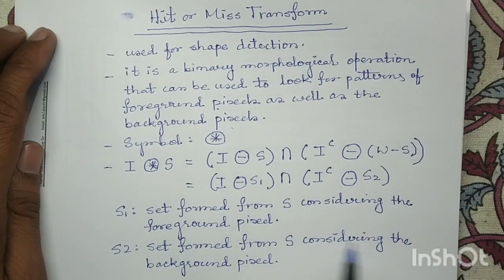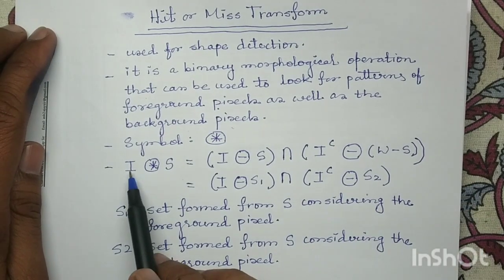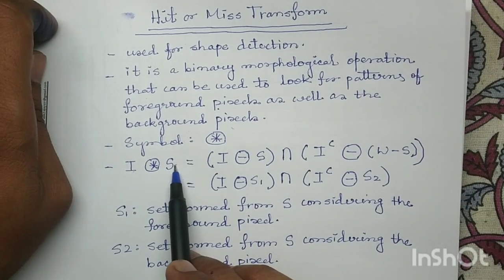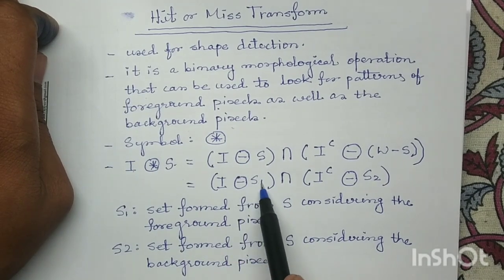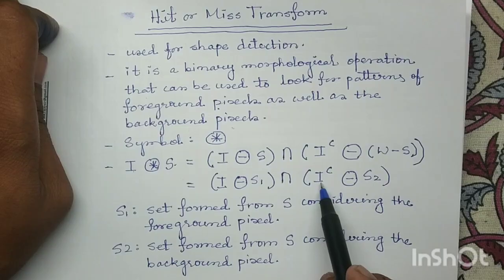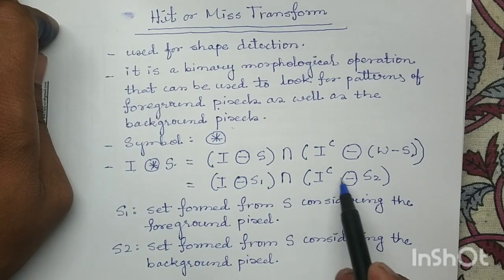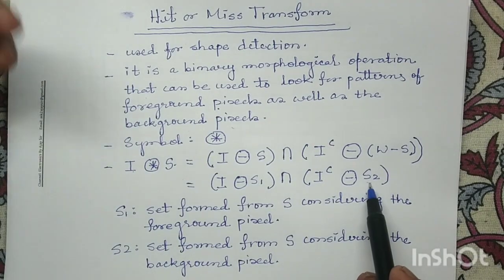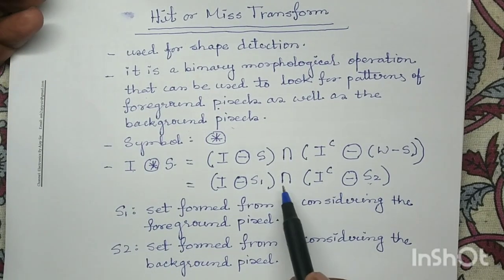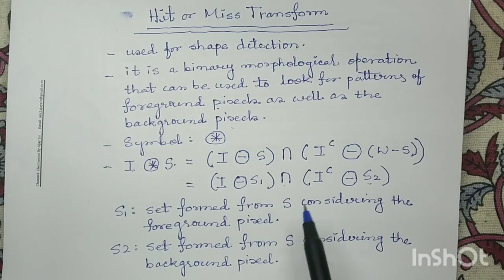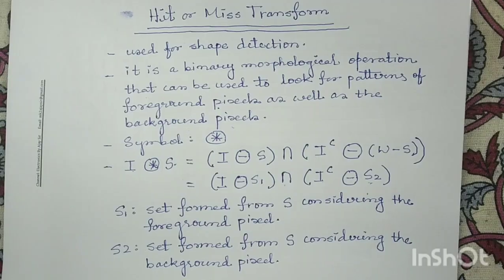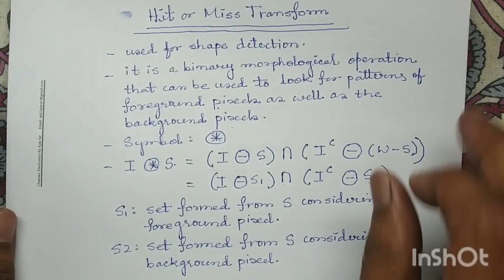In Hit or Miss Transformation, we have to first compute I erosion with S1. In the second step, we compute I complement erosion with S2. And in the third step, we take the intersection of these two eroded outputs. Let us discuss this with an example.